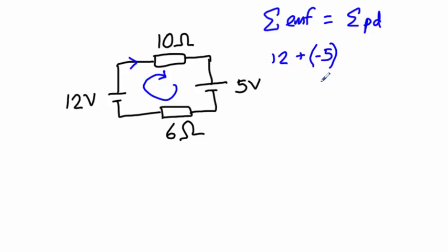And that will be equal to the sum of our potential differences. A very common mistake students make here is to write the resistance instead of the potential difference. This, 10 ohms, is the resistance. We don't know what the current is, so we can call the current I. Now, potential difference V equals IR, so the potential difference across this resistor is going to be 10 multiplied by I.